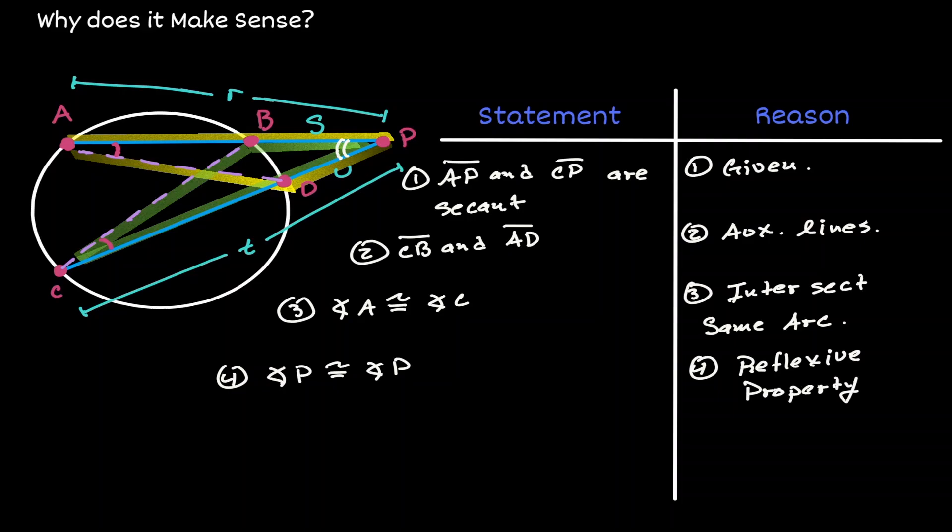Now we have enough information to claim that those two triangles are similar to each other by the angle-angle similarity theorem. We have shown that we have two pairs of congruent angles.